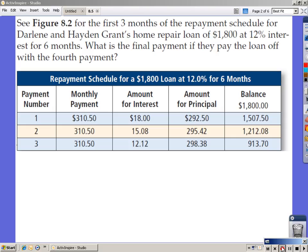See figure 8.2, this is in your book on page 319, for the first three months of the repayment schedule for Darlene and Hayden Grant's home repair loan of $1,800 at 12% interest for six months. What is the final payment if they pay the loan off with the fourth payment? What's shown in this table is the first three payments, and they want to know the payoff for the fourth month. First thing we need to do is find the R value.